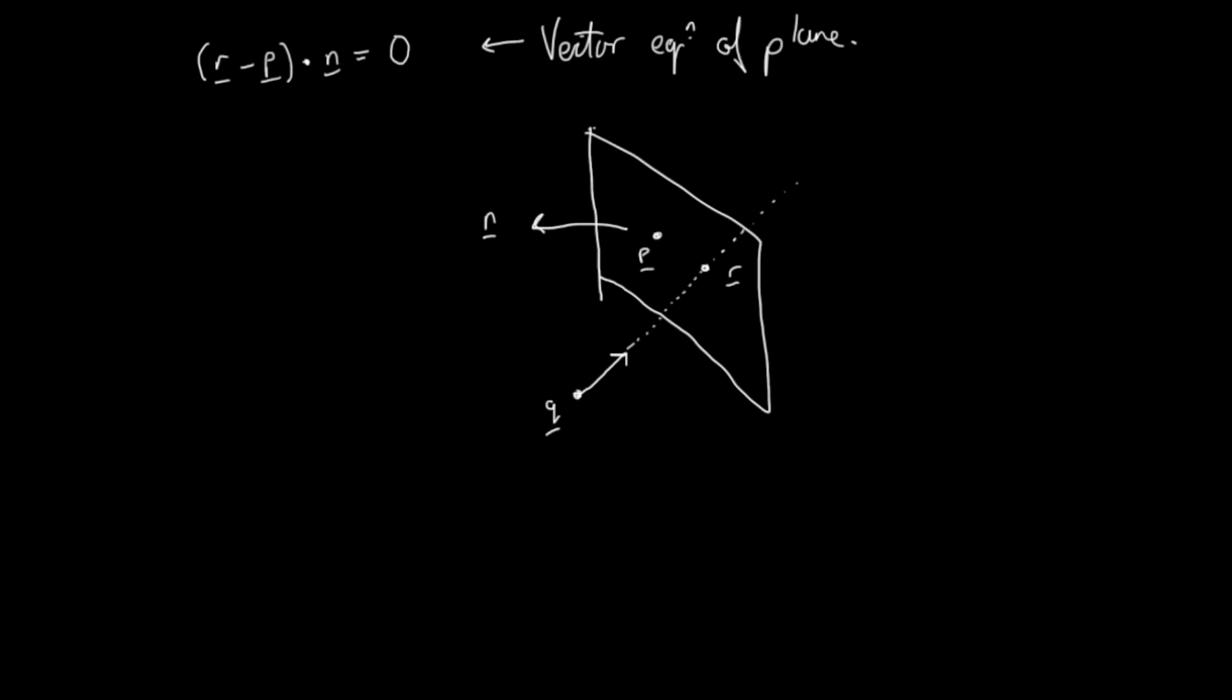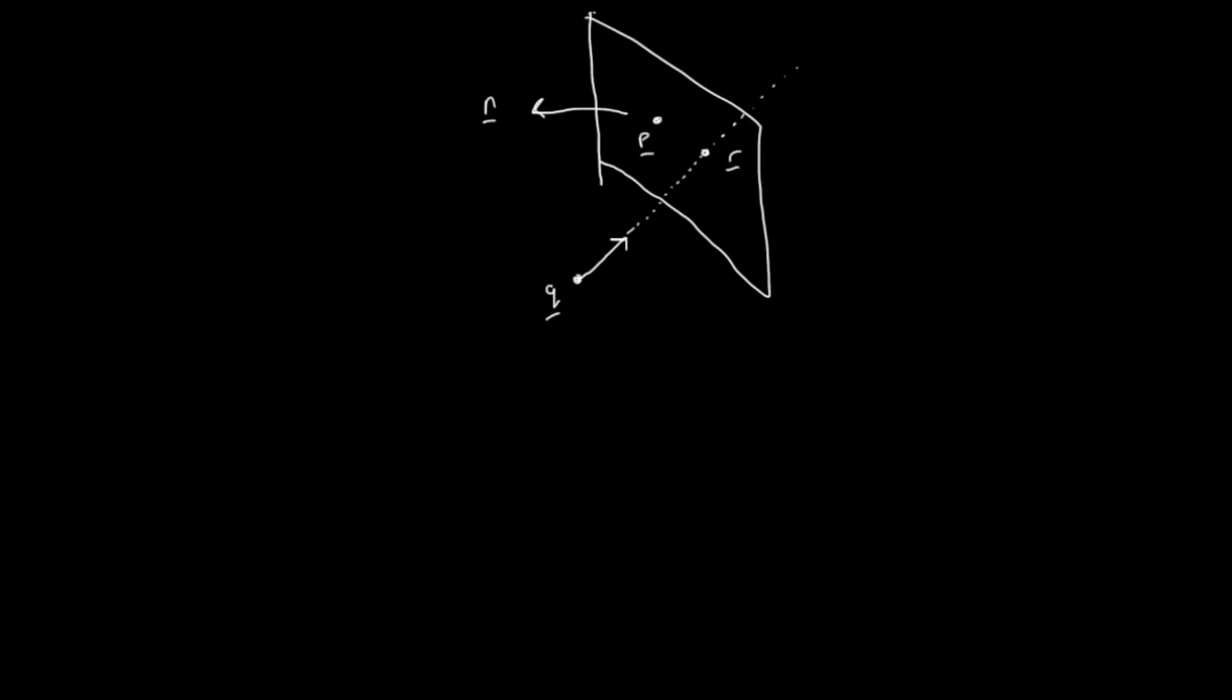So if we recall the vector equation of a line. So the vector equation of a line is R equals Q plus VT. And the vector equation of a plane, which we've just seen, is P minus R dot N equals zero. R and P, by the way, are pretty interchangeable. It just means any vector on the plane. So you might see it as R minus P or P minus R. It doesn't really matter which.